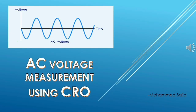In today's experiment, we will learn how to measure AC voltage using CRO. CRO means cathode ray oscilloscope. Today we are going to measure AC voltage. AC means alternating current.